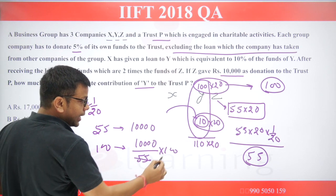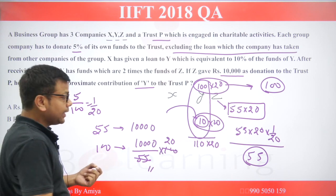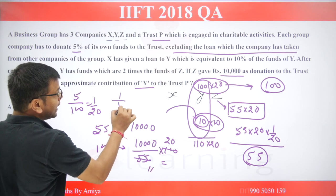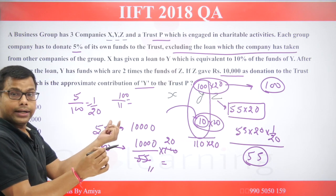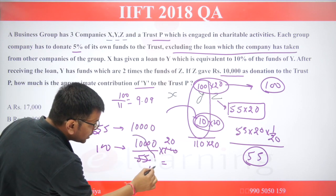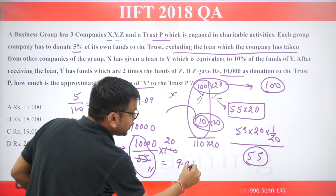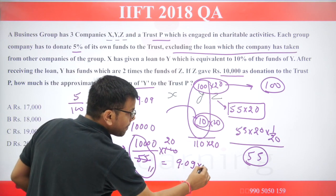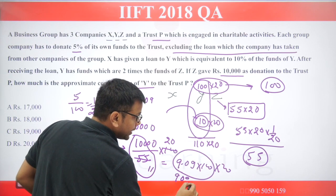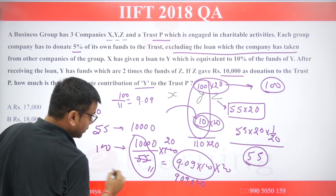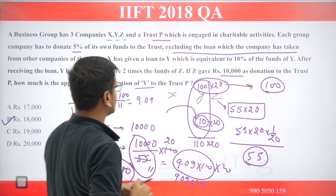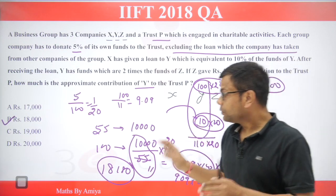So 1 equals 10,000 divided by 55. The 5s cancel out, giving 100 by 11, which is approximately 9.09. Then 9.09 into 20 equals approximately 180. So the approximate contribution of Y to the trust is 18,000. That is the answer to this question.